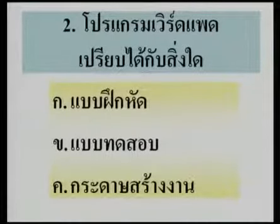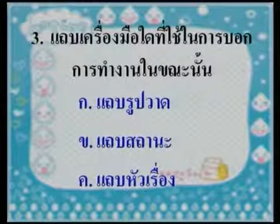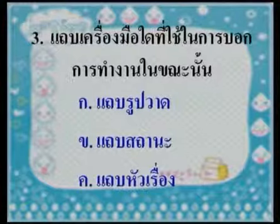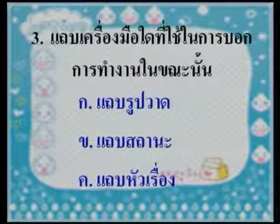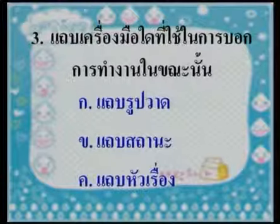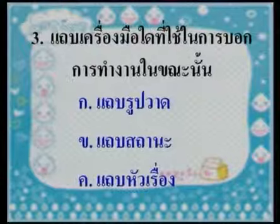ต่อไปครับข้อที่สาม: แถบเครื่องมือใดที่ใช้ในการบอกการทำงานในขณะนั้น? ก. แถบรูปร่าง ข. แถบสถานะ ค. แถบหัวเรื่อง (Next, question 3: Which toolbar is used to indicate the current operation? A. Shapes bar, B. Status bar, C. Title bar)